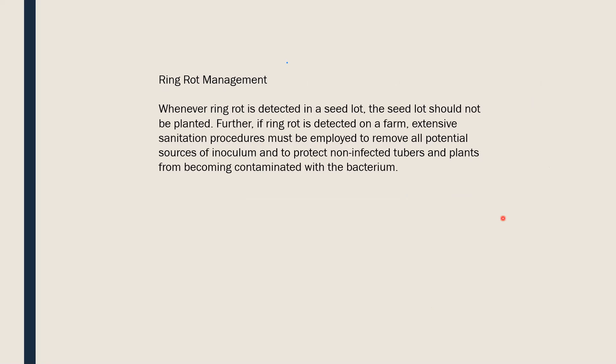For management, the key principle is sanitization. Whenever ring rot is detected in a seed lot, that seed lot should not be planted. If ring rot is detected on a farm, extensive sanitization procedures must be employed to remove all potential sources of inoculum and to protect non-infected tubers and plants from being contaminated with the bacteria. Proper discarding and removal of infected material is very important.